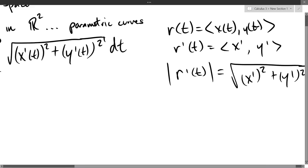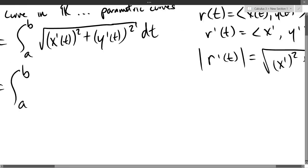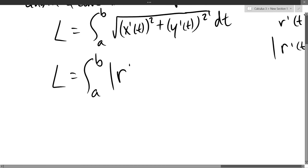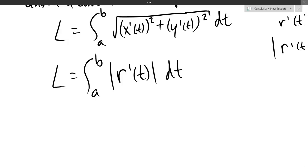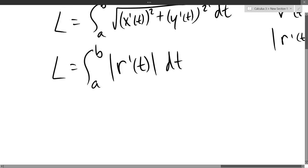So, in higher dimensions, whatever dimension you're in, we're just going to take the derivative, take the magnitude, and integrate it. So, we can write a very compact formula in n dimensions. And it's going to look like magnitude r prime t dt. And that will be whatever dimension that I want. If I'm in three dimensions, which will be the most common problem that we'll solve or work with, it'll look like x prime squared plus y prime squared plus z prime squared square root. But this is really nice because I don't have to assume it's a certain dimension. This is for any n-dimensional curve.